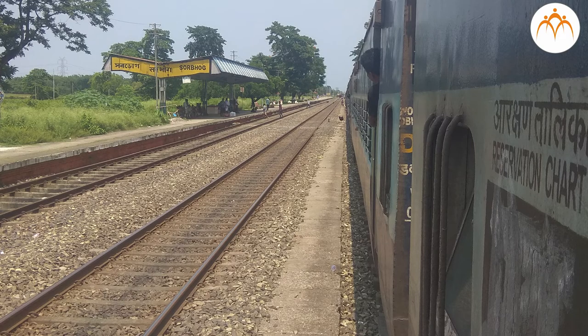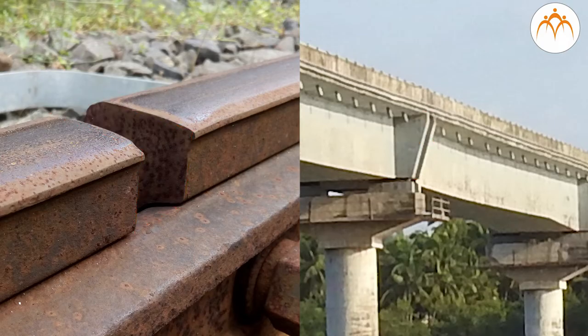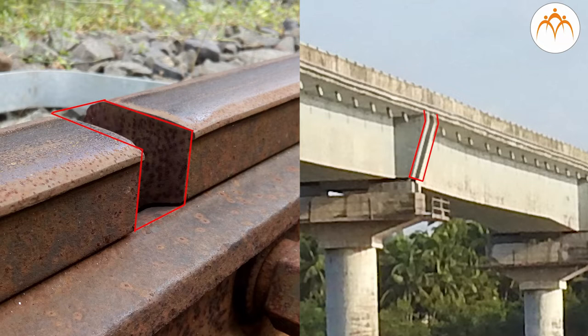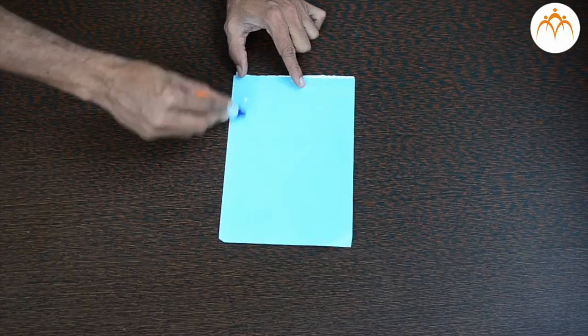Solids also undergo thermal expansion. Railway tracks and bridges have expansion joints to allow them to freely expand and contract with temperature changes. Different substances expand at a different rate.